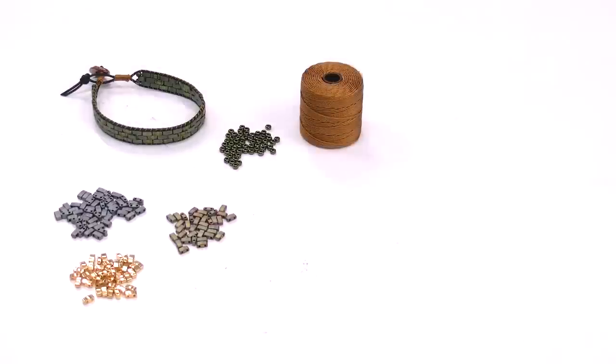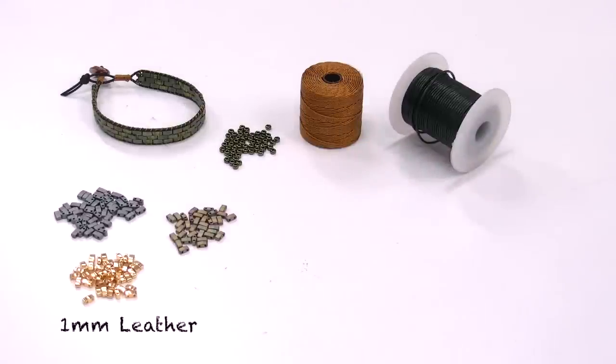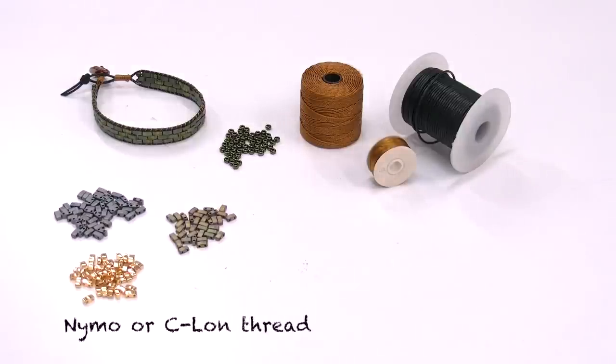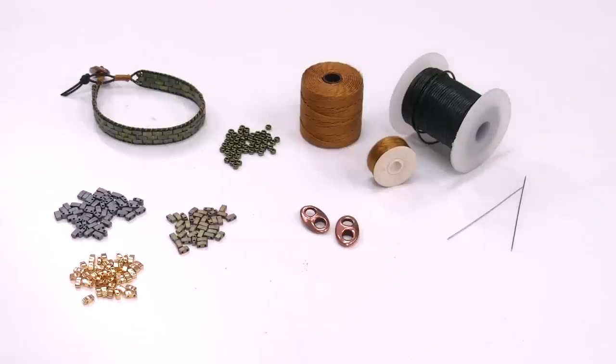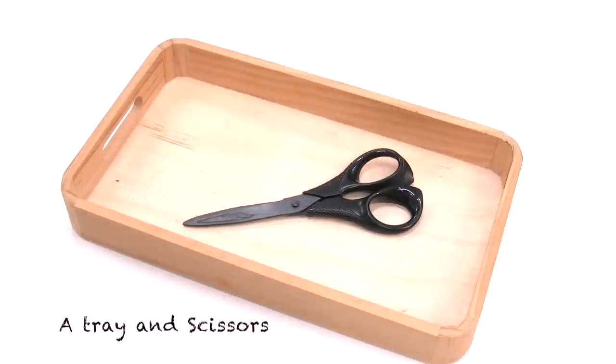S-Long thread, 1mm leather cord, nemo thread or similar, one calabrote, two needles, then a tray to hold the bracelet while we are working and scissors.